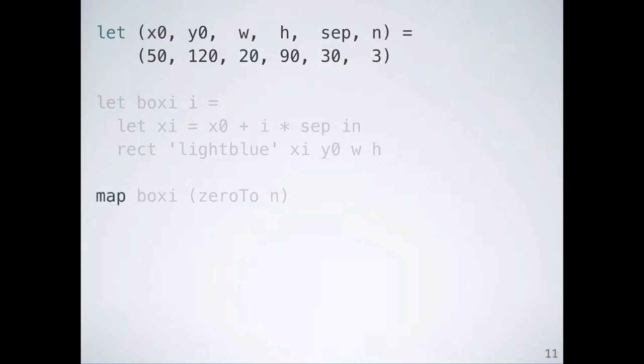We draw the boxes by mapping the numbers 0, 1, and 2 to a function that, when given an index i, will draw the ith box. Each box that it draws has the same color, y position, width, and height.